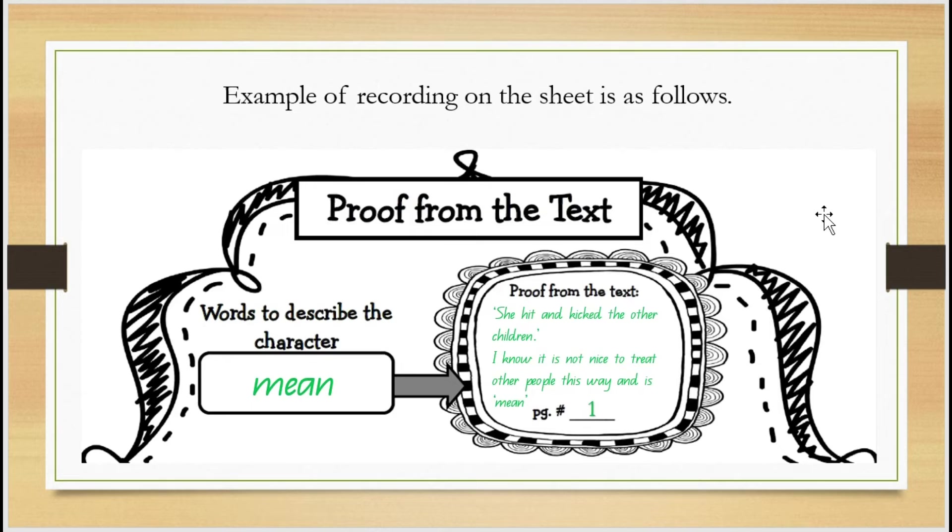This is how I would enter that onto the sheet. My describing word that I've chosen is the word mean and the proof from the text, the exact words from the text, were she hit and kicked the other children. Then I've got I know it's not nice to treat other people this way and is mean, and I also found that all on page one of the text so I've included that there as well. You can either go and do your own or you can copy mine into your worksheet.